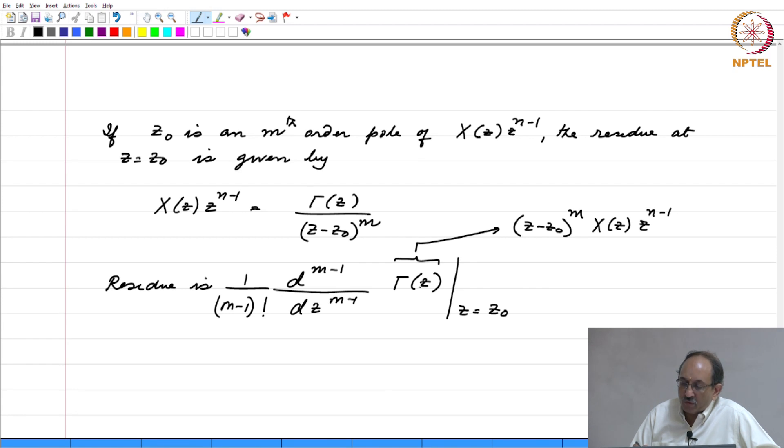And, this is no different from what we did for partial fraction expansion. All you did was, you multiplied by the pole to cancel it out and then evaluated the remaining expression at the location of the pole.